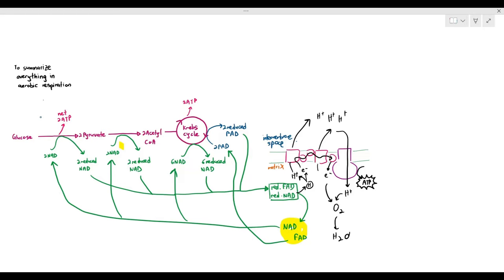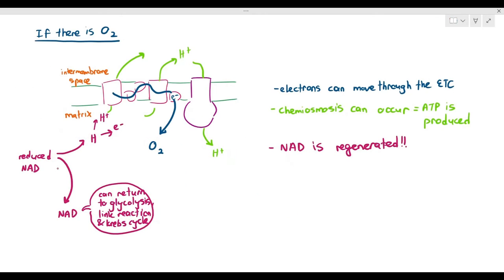This is aerobic respiration. We covered why oxygen is important — because oxygen is the final electron acceptor. If there is oxygen, the electrons can move through the ETC, chemiosmosis can occur, oxygen is the final electron acceptor. And if oxygen is present, the electrons can continue moving in the ETC, chemiosmosis can continue, and NAD is regenerated.